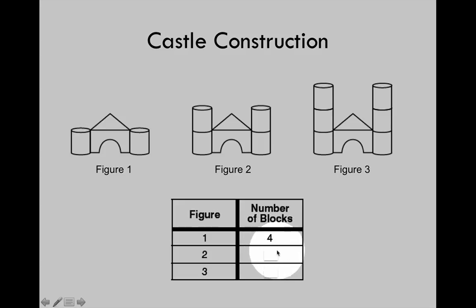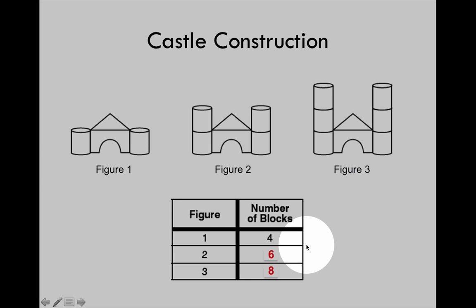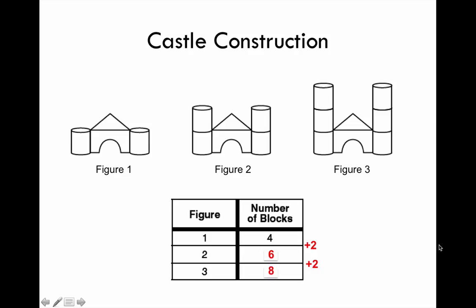Let's fill in the number of blocks used in each stage of construction. Figure 1 uses 4 blocks. Figure 2 uses 6 blocks. Figure 3 uses 8 blocks. Notice how the numbers in the table change — the number of blocks in each successive figure increases by 2. We can show that by adding the numbers on the side. If you can state the pattern rule, you can continue a pattern to figure out the number of blocks for additional stages of castle construction.